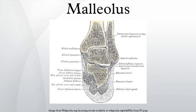Malleolus is the bony prominence on each side of the ankle. Each leg is supported by two bones: the tibia on the inner side of the leg and the fibula on the outer side of the leg. The medial malleolus is the prominence on the inner side of the ankle, formed by the lower end of the tibia. The lateral malleolus is the prominence on the outer side of the ankle, formed by the lower end of the fibula.